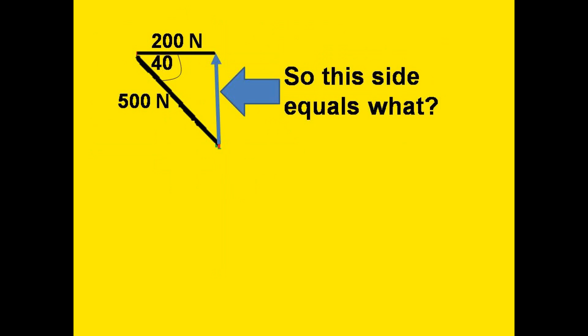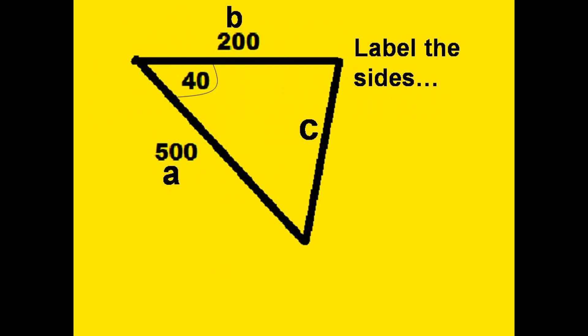We draw a resultant, but what is it equal to? What's its magnitude? Let me do a redraw of this now and label all the sides. What is the magnitude of this resultant?